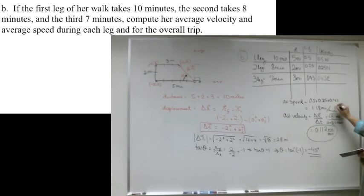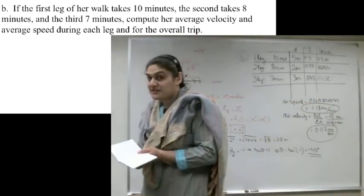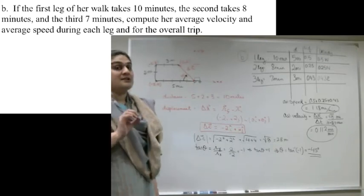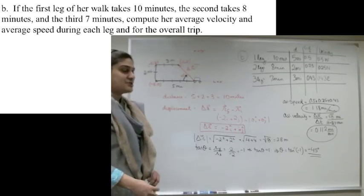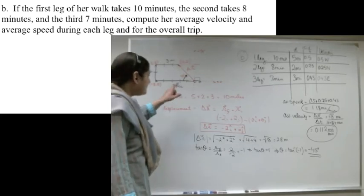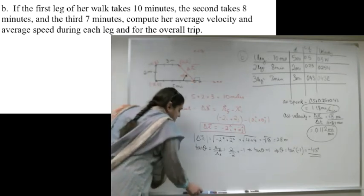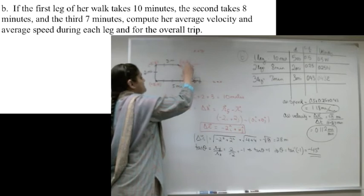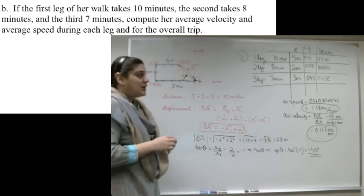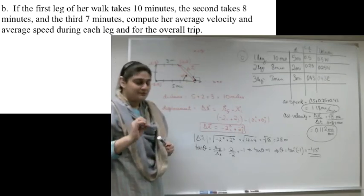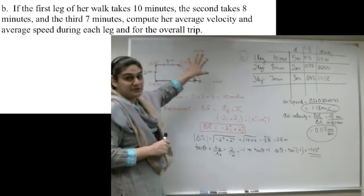Note the difference between average speed and average velocity — they are not the same thing. One depends on displacement and the other on the total distance covered. For example, if after the trip she returns to her original starting spot, her average velocity will be zero, because displacement is zero. But her average speed will still incorporate all the distances traveled.